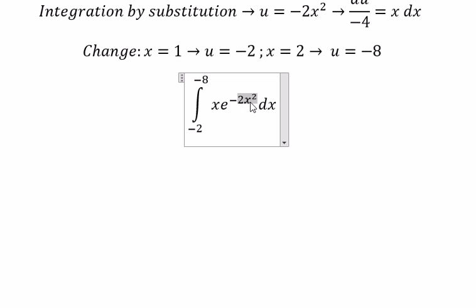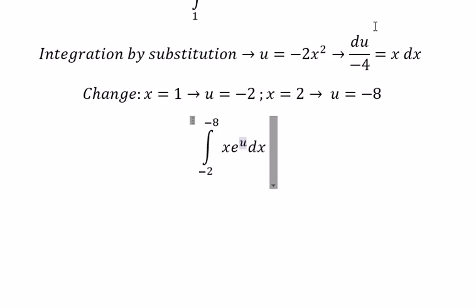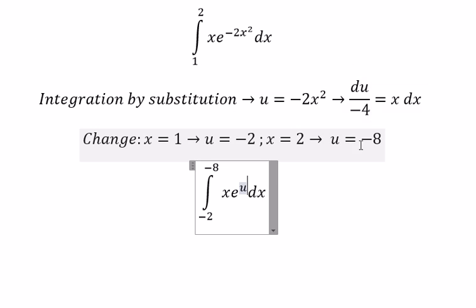This one, we change for u. x dx, we change for du over negative number 4.